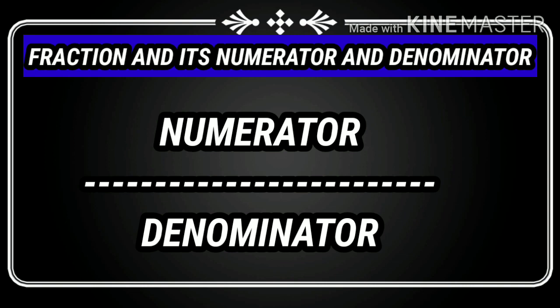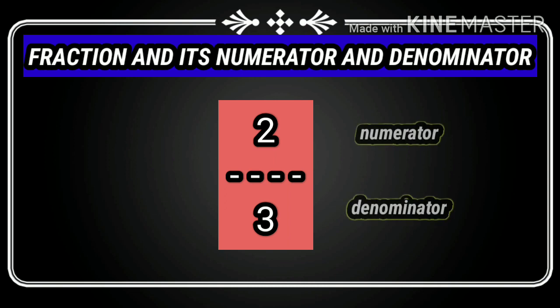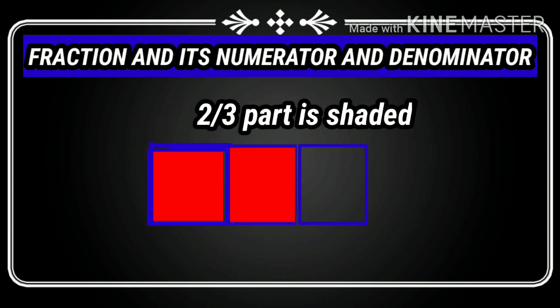The number below the horizontal bar is called the denominator, and the numeral above the horizontal bar is called the numerator. For example, 2 upon 3 is a fraction. In this fraction, 2 is the numerator and 3 is the denominator — 3 is below the horizontal line and 2 is above. In this figure, 2 third part is shaded — 3 equal parts, 2 parts shaded. This type of question is always asked in the exam, so you have to remember it.